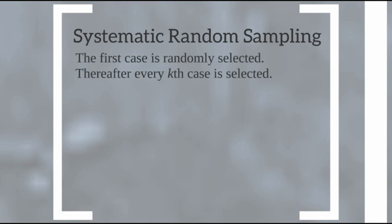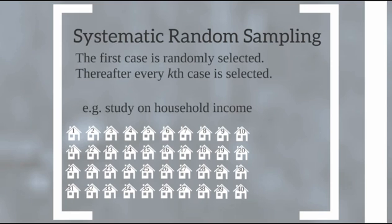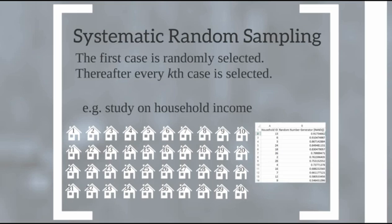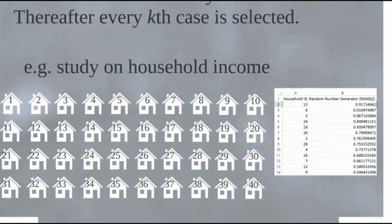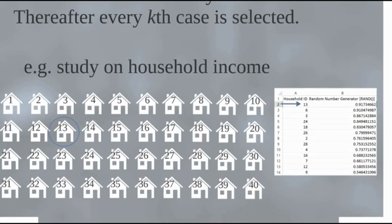This often occurs in opinion surveys, where pollsters randomly select every 50th person that walks by — the idea being that every 50th person represents the entirety of the population. Using our household income example with 40 houses, I used a random number generator, sorted by highest number, and found household 13 comes up first. We start with household 13 and then sample every fourth house: houses 17, 21, 25, 29, 33, and 37.